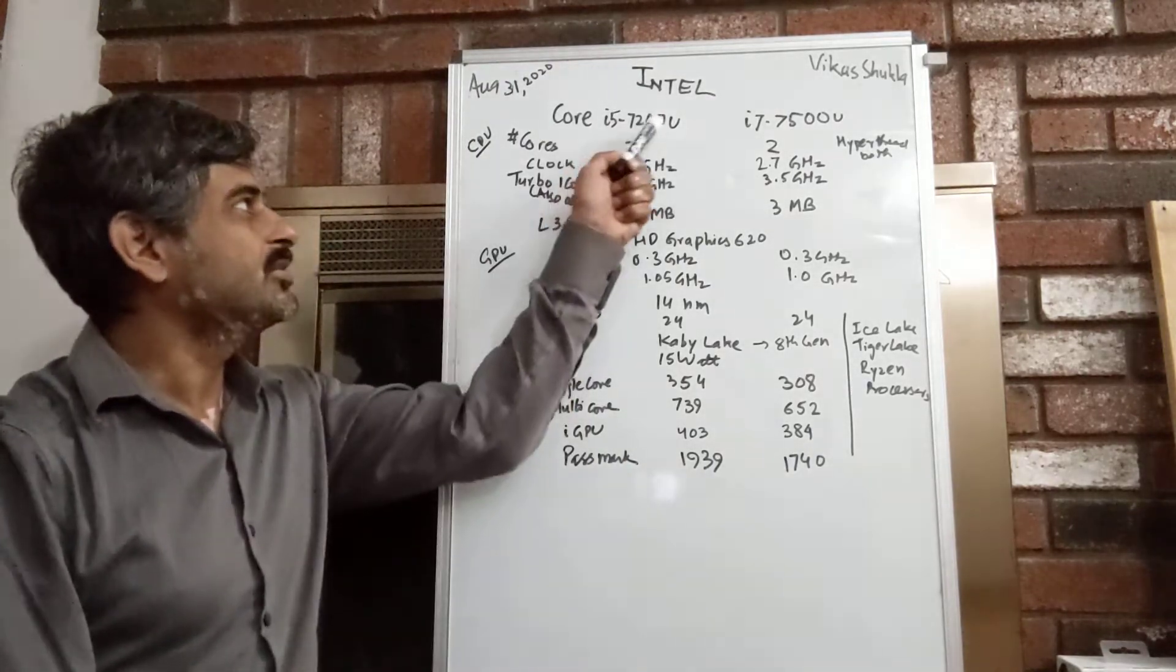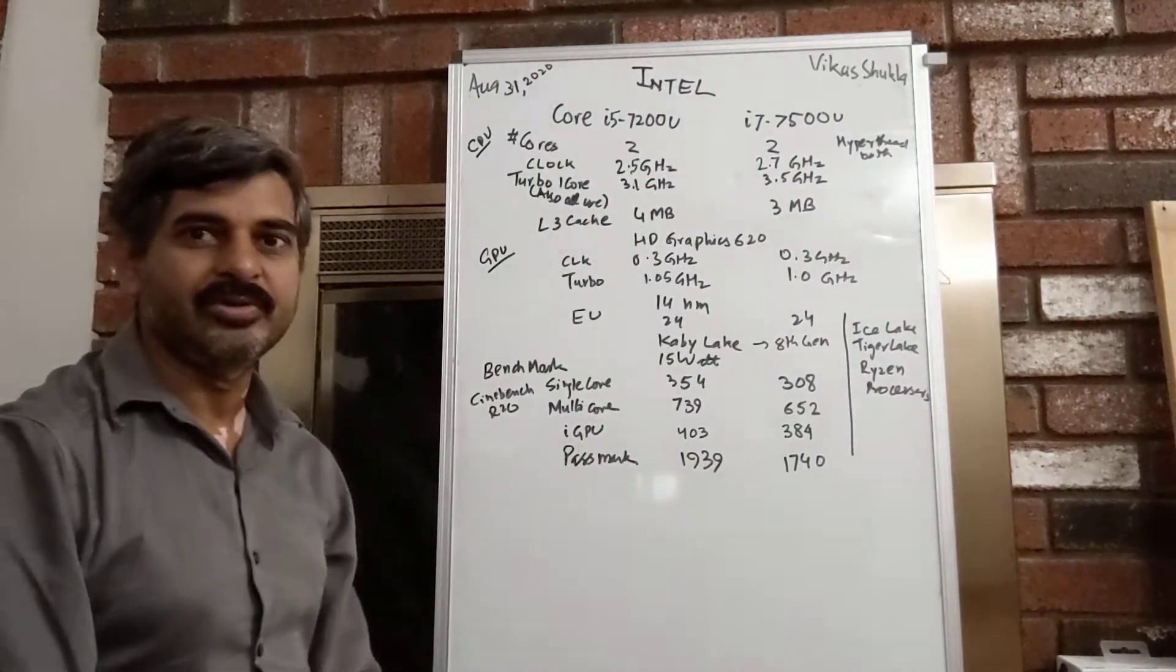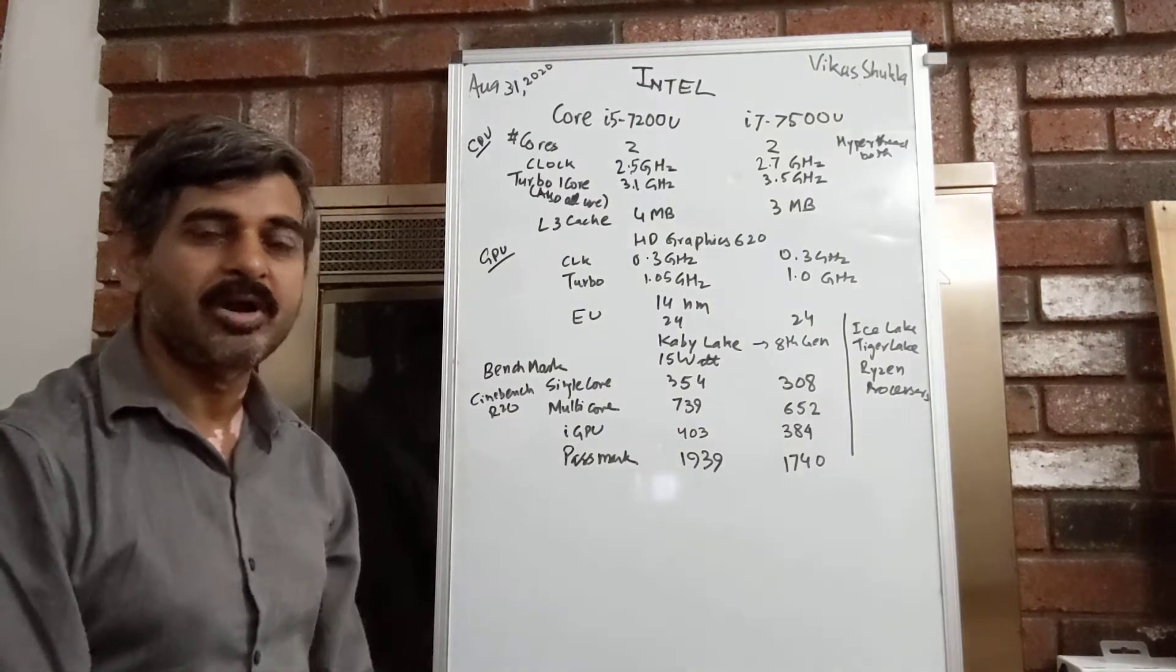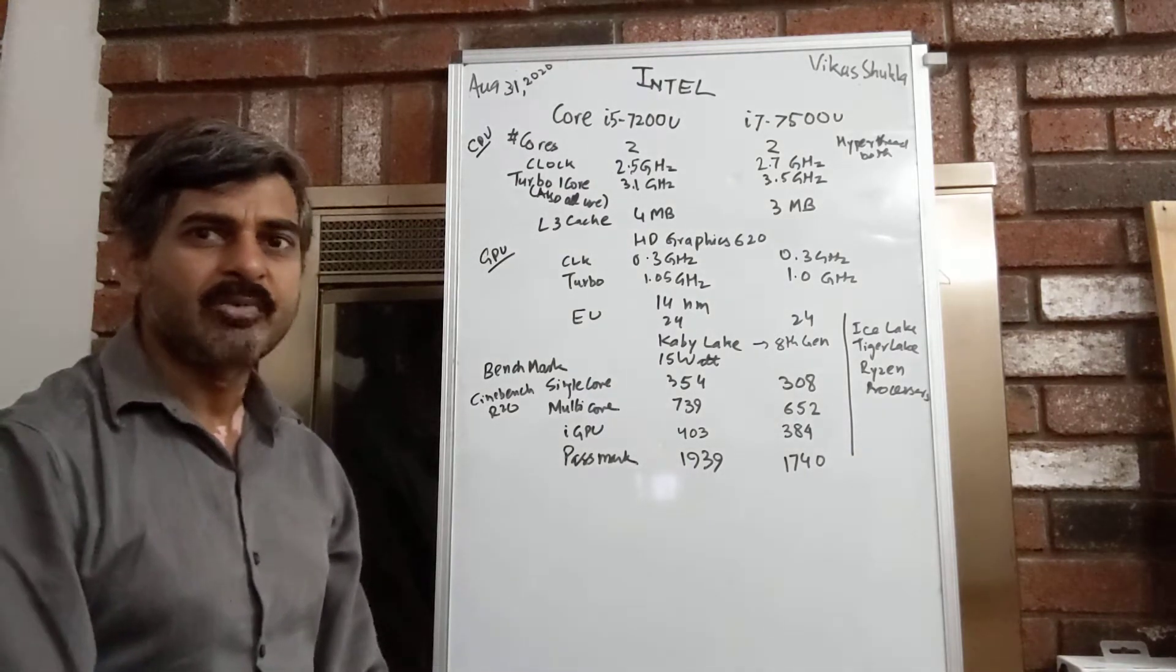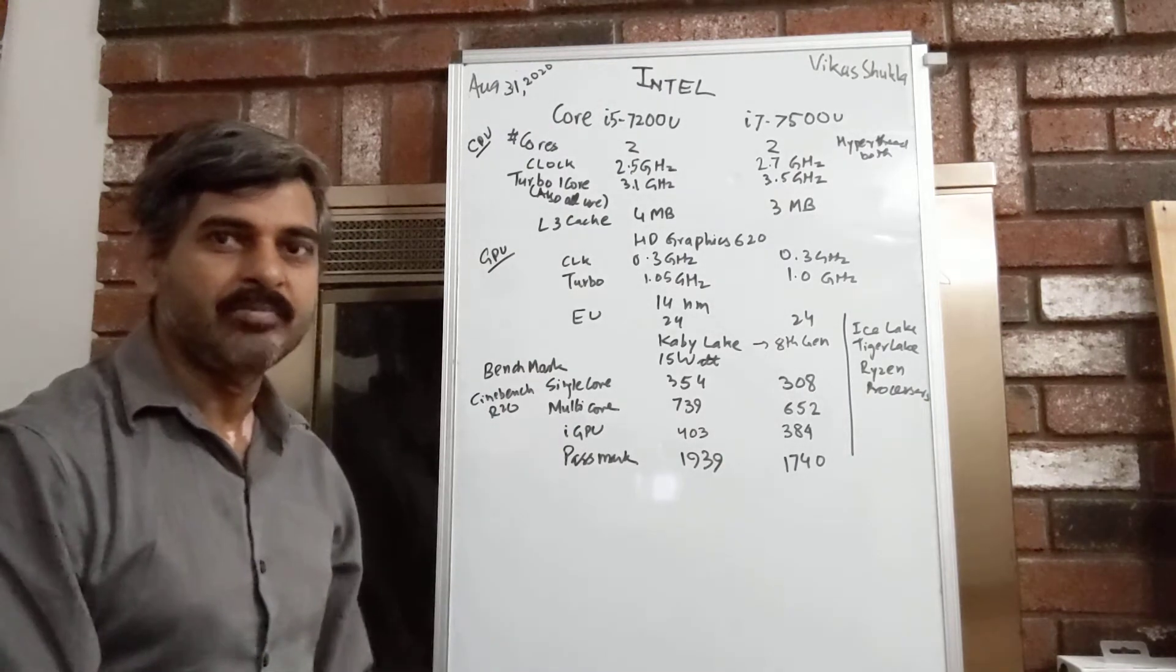Intel's Core i5-7200U and i7-7500U are two very popular Intel processors and a lot of people are searching for them. I'm going to go through quick differences between them.